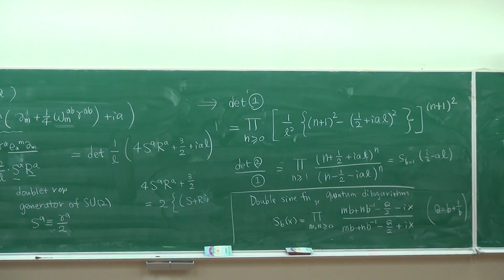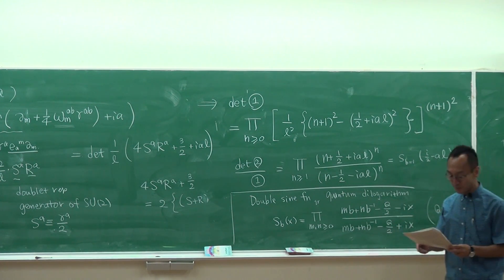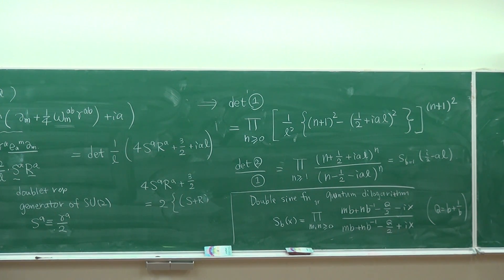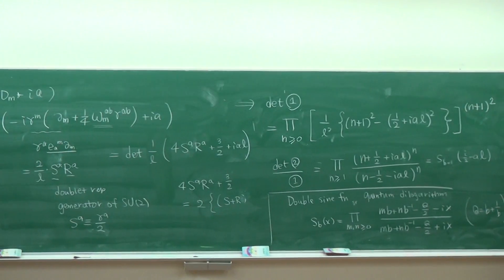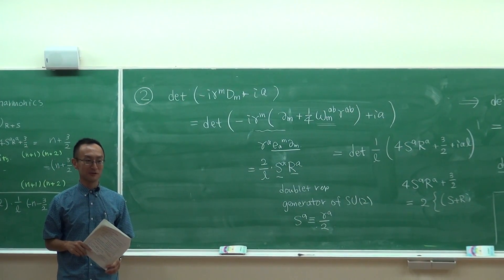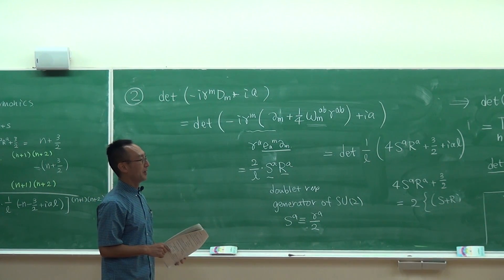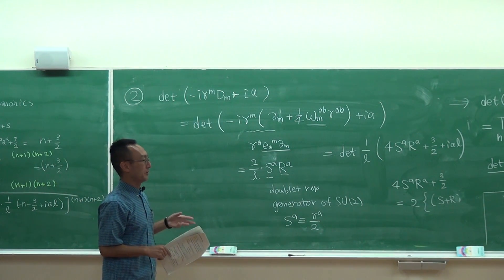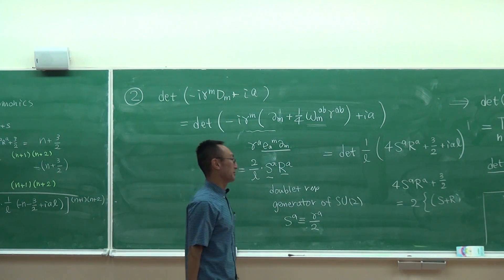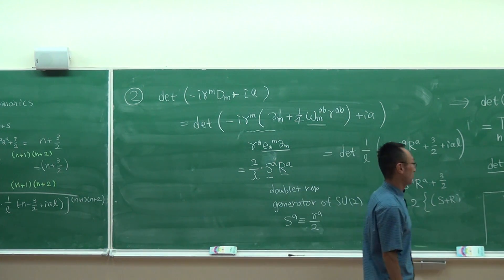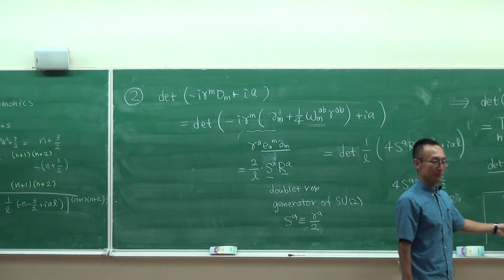This function is a very interesting function. It makes appearance in many exactly-solvable physical models. Quite a few examples in low-dimensional quantum field theory. Those are interacting, but remarkably those models are exactly-solvable, and some physical quantities like correlation functions, low-point functions, can all be expressed with the help of this function.